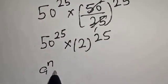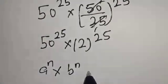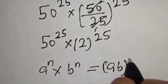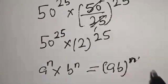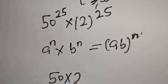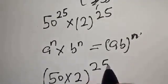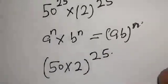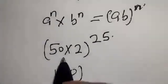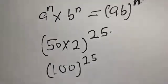Applying the rule: a raised to power n multiplied by b raised to power n equals a times b raised to power n. So we get 50 multiplied by 2, raised to power 25, and 50 multiplied by 2 is 100, raised to power 25.